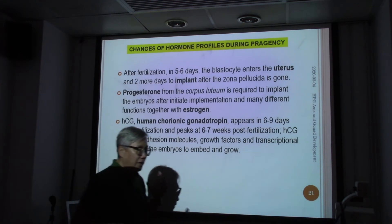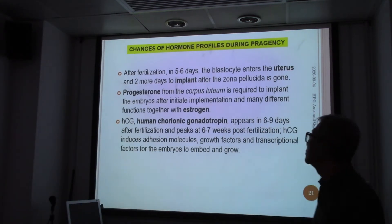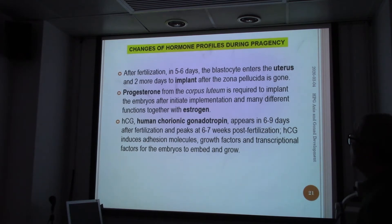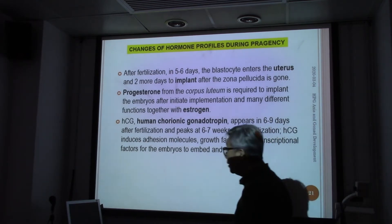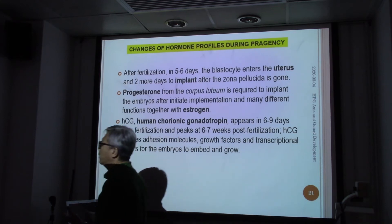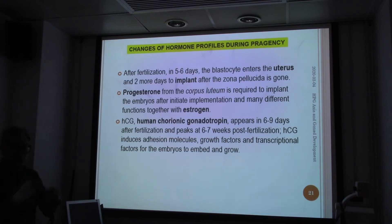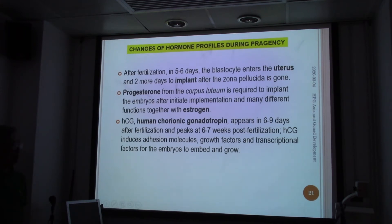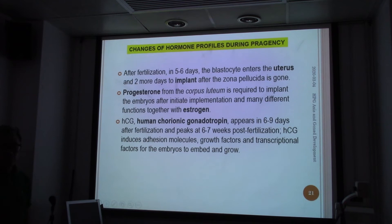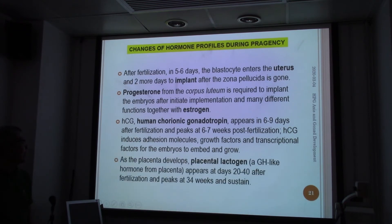After that, we have two other hormones. One very important one is hCG — human chorionic gonadotropin. It is a family of gonadotropins, but it is not from the pituitary gland. It is actually from the chorion, the outside of the embryo. It comes out around one week after fertilization and remains for a few months. hCG also induces adhesion molecules, growth factors, and a number of other transcription factors for the baby to develop and grow.